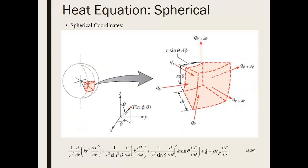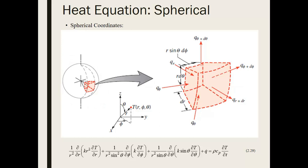In spherical coordinates the equation gets a bit more complicated, introducing sine terms. However, the convenience of spherical coordinates is that you can often reduce to a one-dimensional system. If you assume that conditions at the boundary are uniform, you can neglect temperature variations with respect to angles phi and theta, leaving only radial temperature variation — so those angular terms drop to zero.